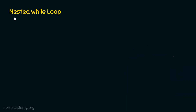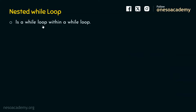Let's first understand what a nested while loop is. A nested while loop is a while loop within a while loop. When a while loop is contained within another while loop, then it is called a nested while loop — that structure itself is called a nested while loop.